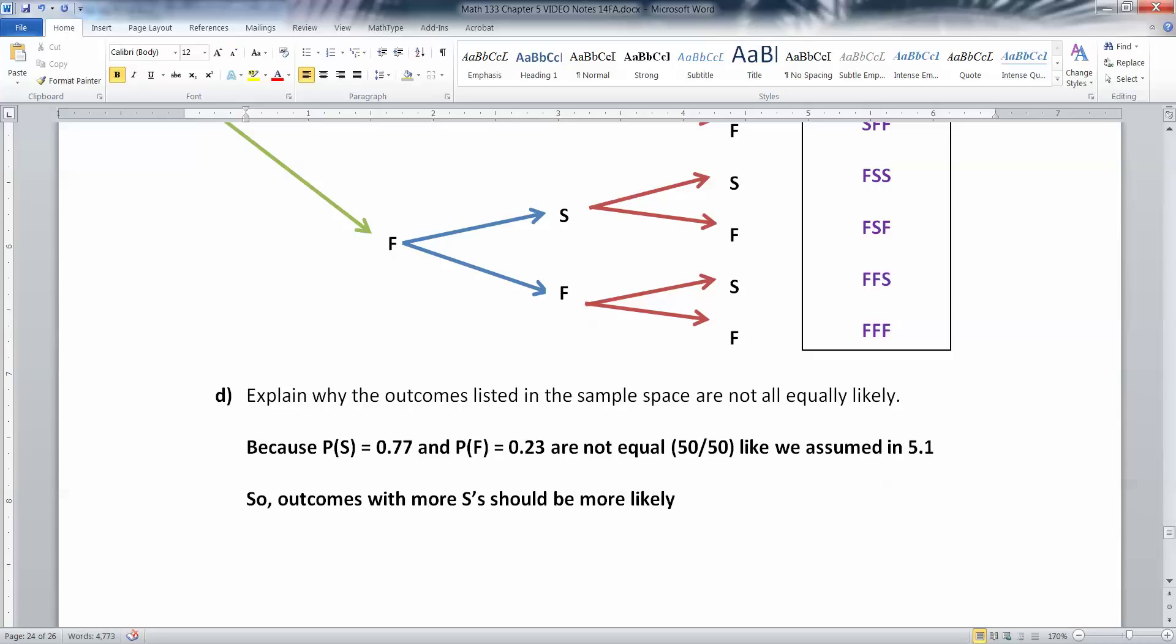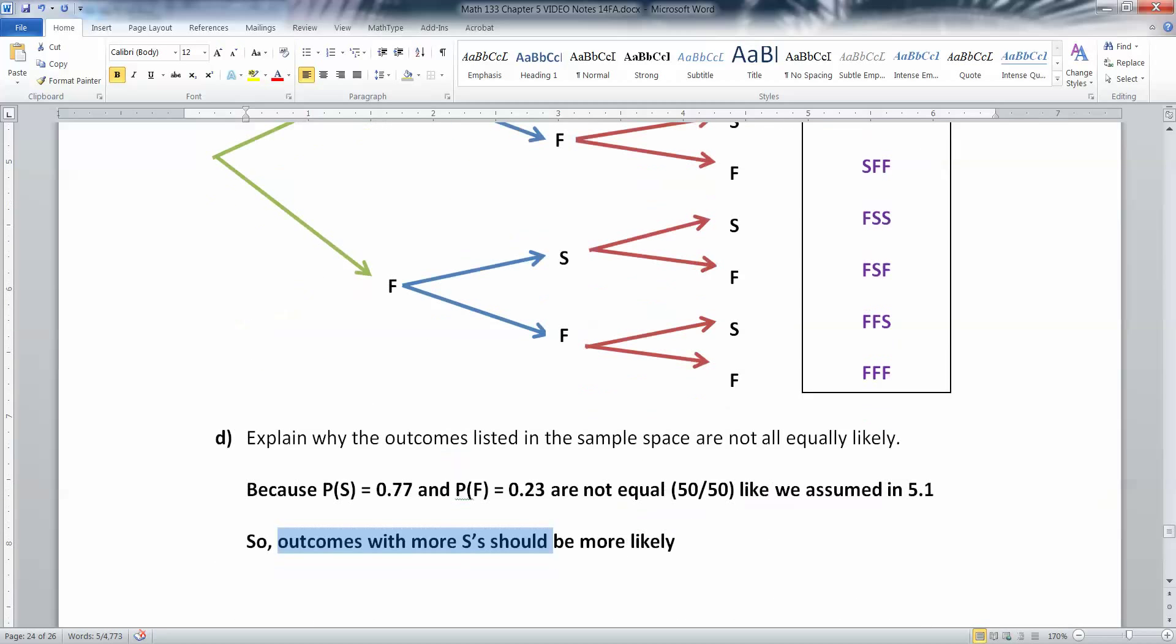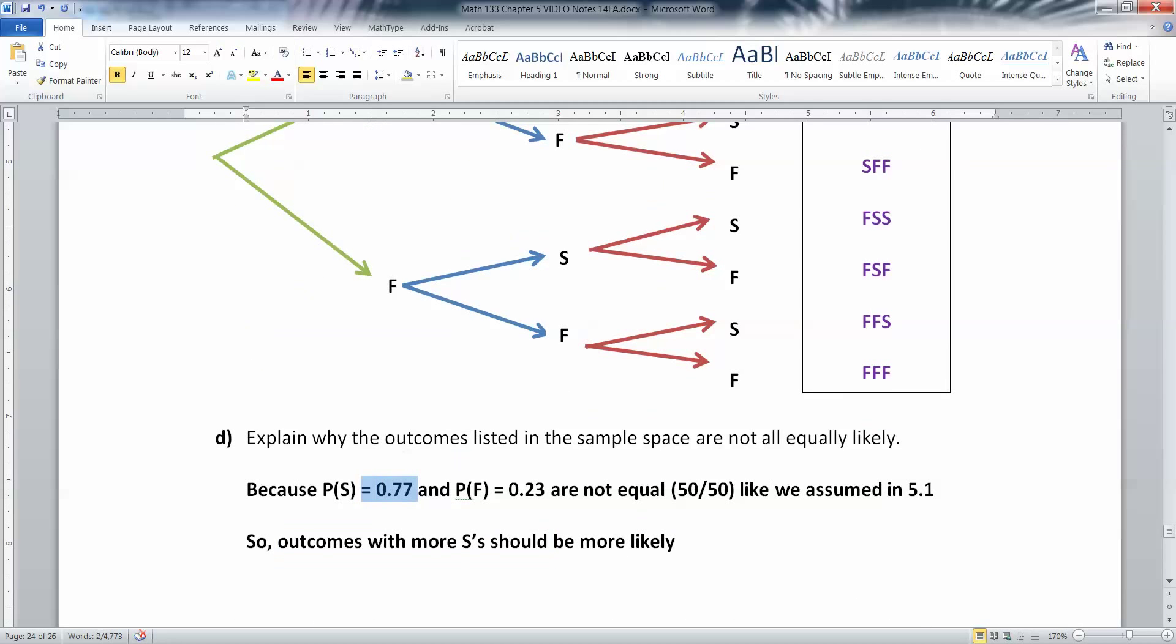In Section 5.1, we said, oh, pretend it's 50-50 every time, right? Two heads and tails, males and females, that kind of thing. But in this case, that wouldn't make sense. I mean, first of all, it would be a pretty terrible NBA player that only has a 50% chance of making a free throw. So because of this, the ones that have more S's in them, more successes, should be more likely because S is more likely as a 0.77 chance.